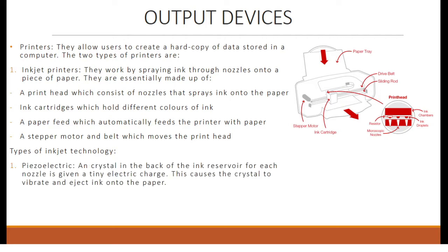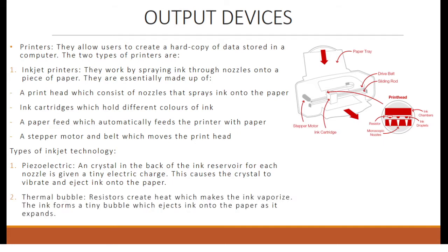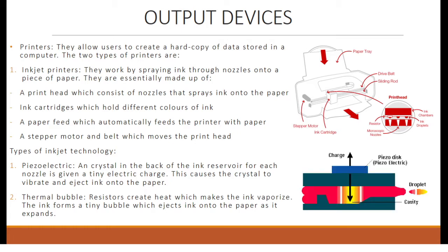Types of inkjet technology: First, piezoelectric — a crystal in the back of the ink reservoir for each nozzle is given a tiny electric charge, causing the crystal to vibrate and inject ink onto the paper. Second, thermal bubble — resistors create heat which makes the ink vaporize, and the ink forms a tiny bubble which ejects ink onto the paper as it expands. The top right diagram displays the components of an inkjet printer using thermal bubble technology, and the bottom right displays piezoelectric technology. You do not need to memorize the diagrams, but it may be useful to do so.